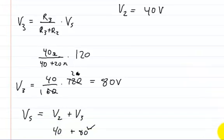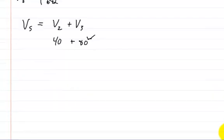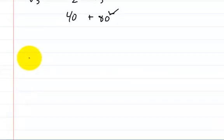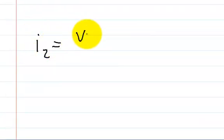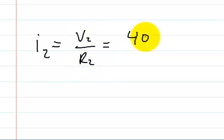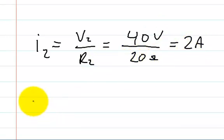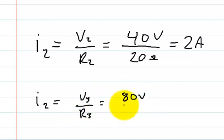So I think it was I2. We could say it's equal to V2 divided by R2. And V2 is equal to 40 volts. And R2 was 20 ohms. So that's 2 amps. And we could use the other one and say, well, I2 is also equal to V3 divided by R3. And V3 was 80 volts. And R3 was 40 ohms. So that checks out as well as 2 amps.